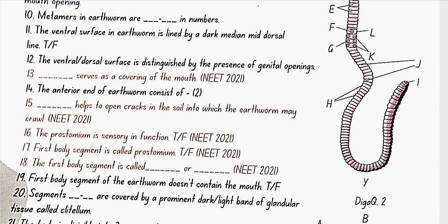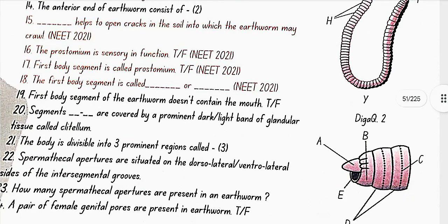The ventral surface is distinguished by the presence of genital openings. Prostomium serves as a covering of the mouth. The anterior end of the earthworm consists of the mouth and the prostomium. Prostomium helps to open cracks in the soil into which the earthworm may crawl. The prostomium is sensory in function — yes, this is true. The first body segment is called prostomium — no, this is false. The first body segment is called peristomium or buccal segment.